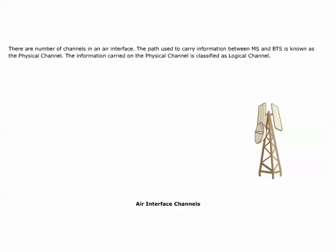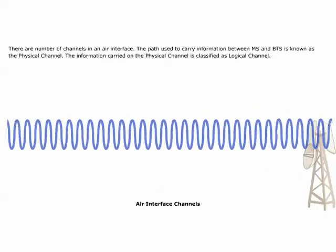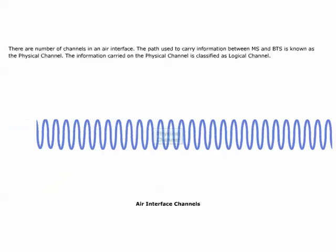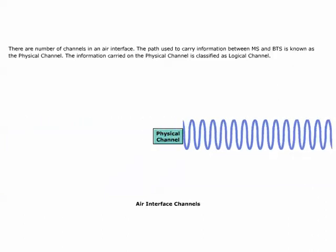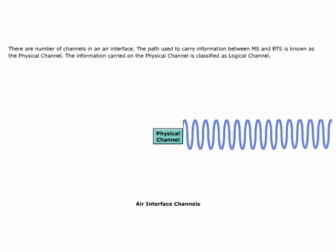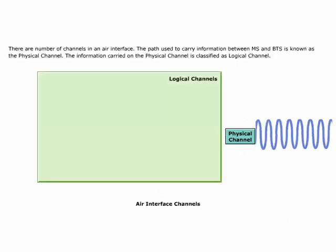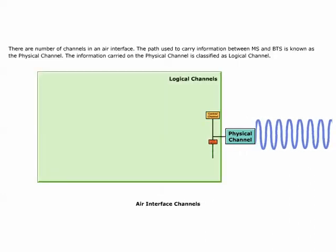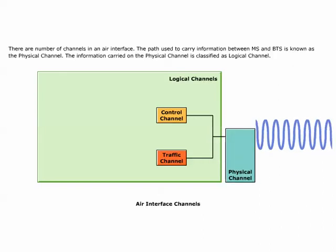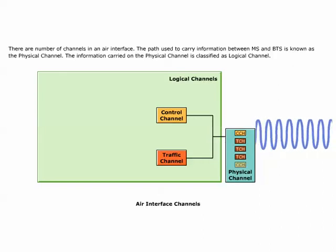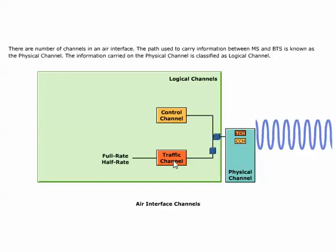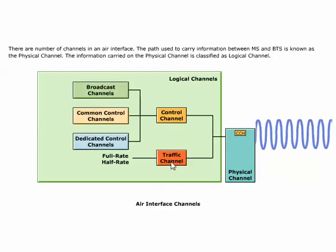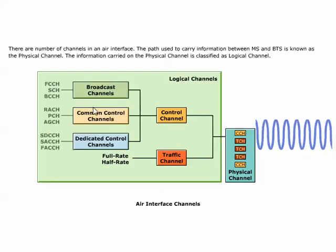The path used to carry information between MS and BTS is known as the physical channel. The information carried on the physical channel is classified as logical channel. The logical channels are divided into two categories: control channels and traffic channels. The control and traffic channels are further subdivided — there are two types of traffic channels and three types of control channels, with a total of nine different types.